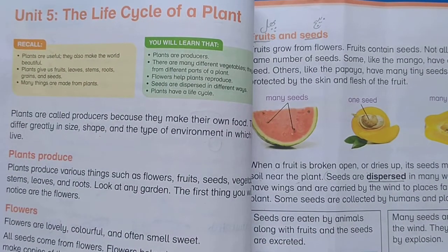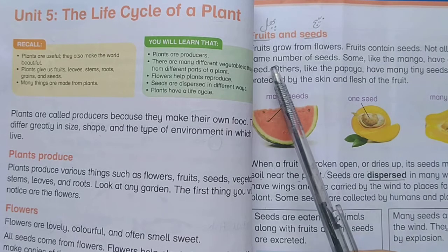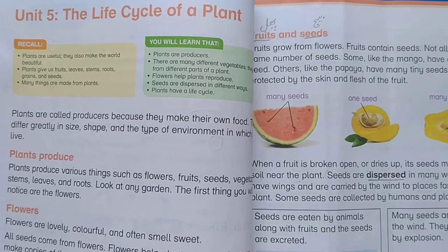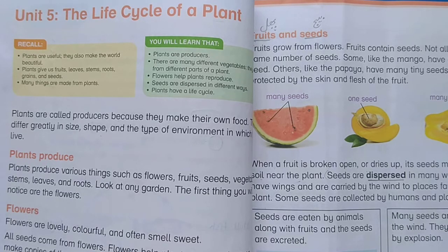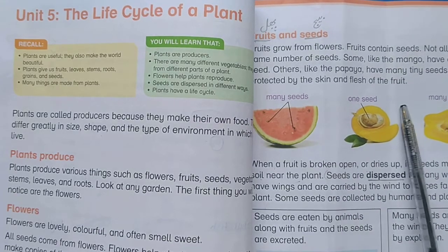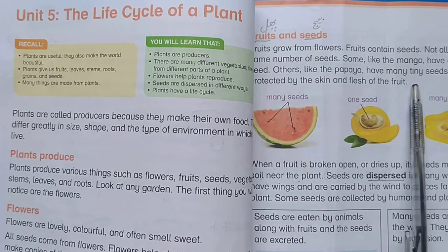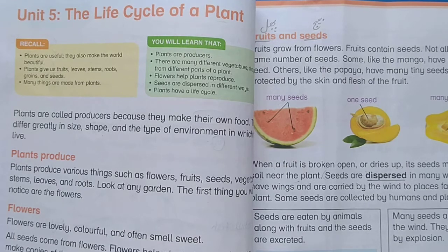Fruits grow from flowers and fruits contain seeds. Not all fruits have the same number of seeds — for example, a mango has only one large seed, while papaya has many tiny seeds. Seeds are protected by the skin and flesh of the fruit, meaning they are hidden inside the fruit.